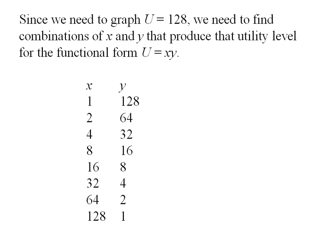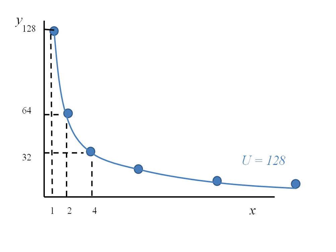I'm just going to take these points and plot them. So here's my xy space. Here I'm plotting x1, y128, x2, y64, x4, y32, and so on. Once I have all my points plotted, I connect them, and that's my indifference curve where utility equals 128.